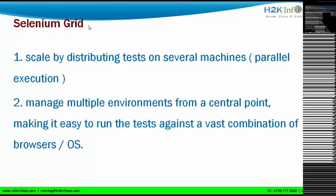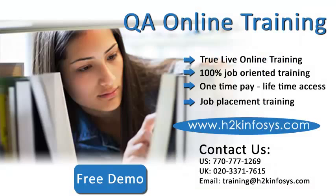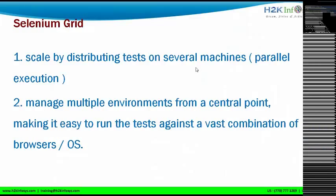The next component is Selenium Grid. Selenium Grid is basically a concept — it does not have a user interface. Selenium Grid is a concept to execute multiple scripts on multiple machines. You can scale by distributing tests on several machines in parallel. For example, if you have 20 automation scripts and 5 machines, you can distribute those 20 scripts across the 5 machines — that is achievable using the Selenium Grid concept.